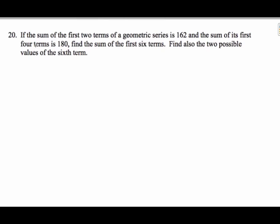Okay, here we go, number 20 from the geometric sequence and series scenario. The sum of the first two terms of a geometric series, I know that's going to be U1 plus U1R, that has to be 162. And I know if it's the first four terms, the first term plus the second term plus the third term plus the fourth term has to be 180.